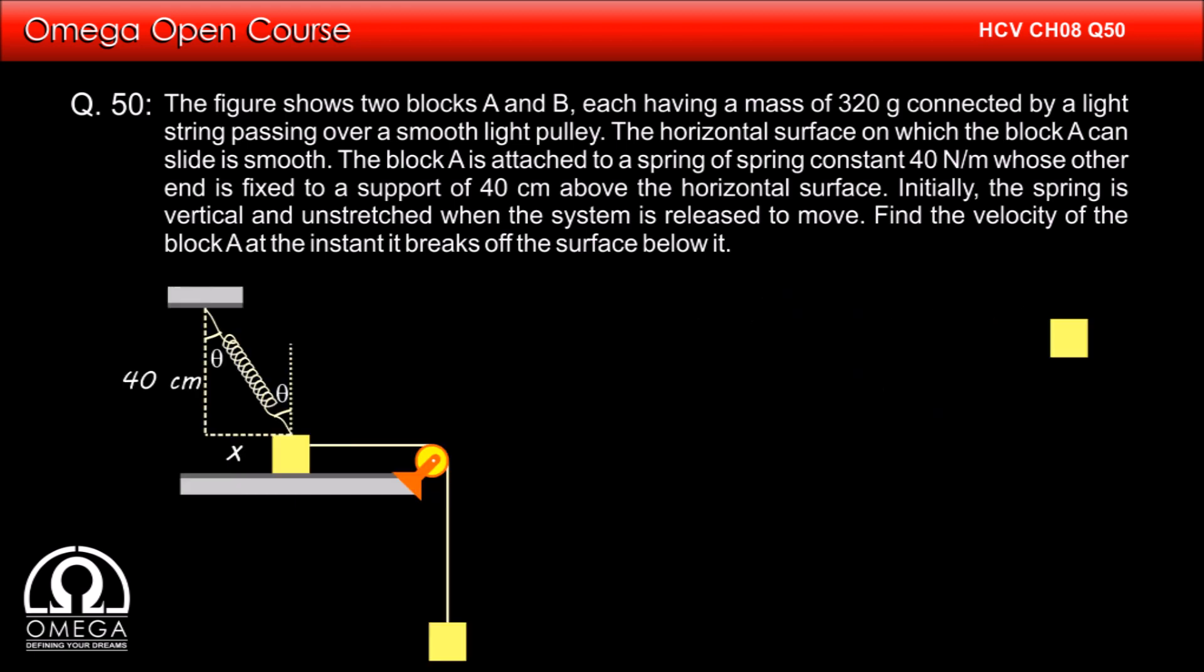Now let us make the free body diagram of the block. Gravitational force mg acts on it in vertically downward direction. The spring pulls it towards right with tension T and the spring pulls it towards itself with force K into delta L. Since the spring makes angle theta with the vertical, the angle spring force makes with the vertical is also theta.